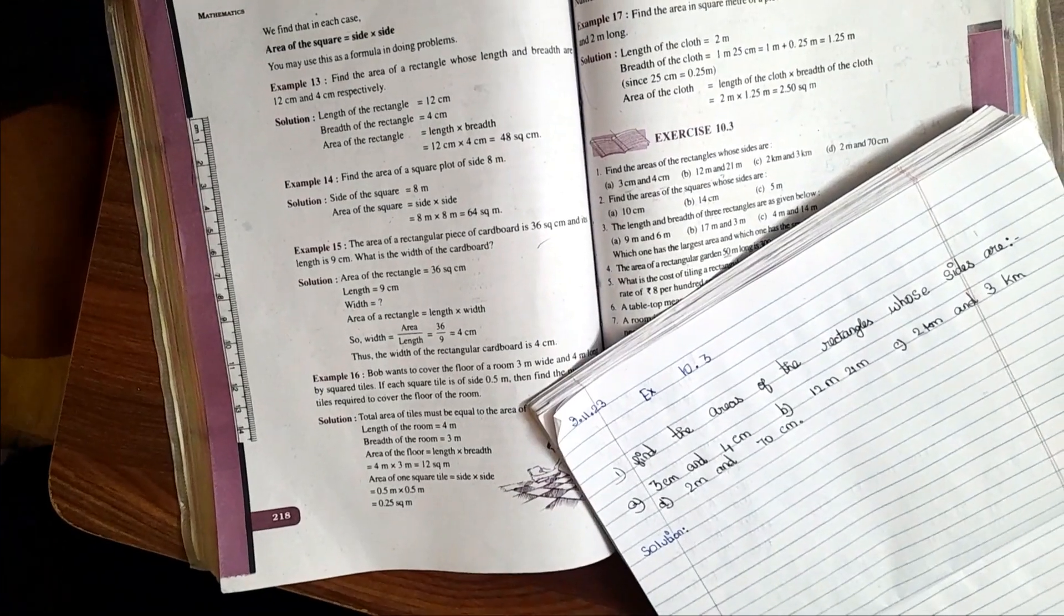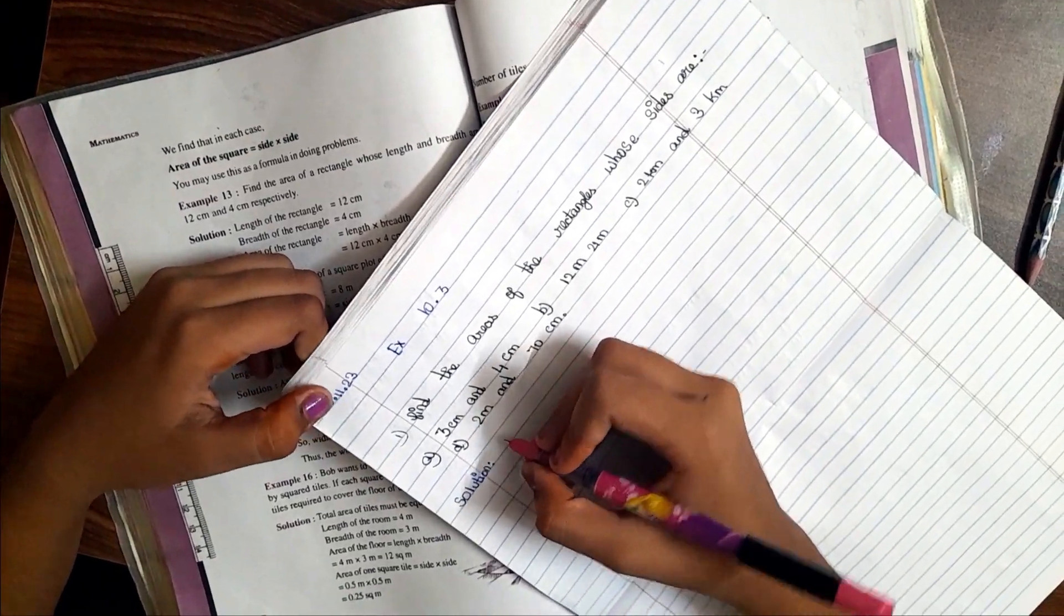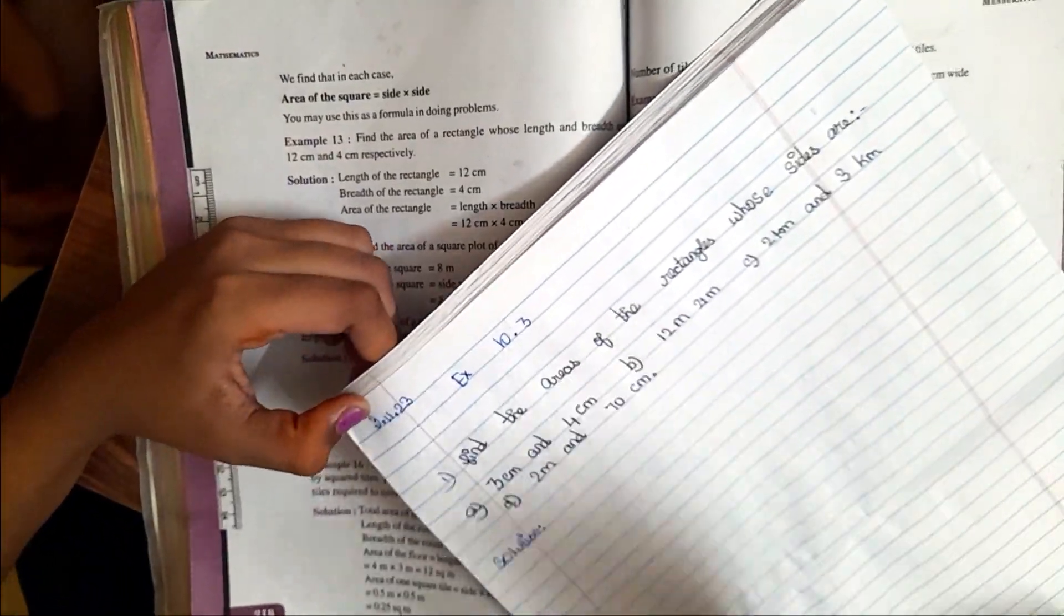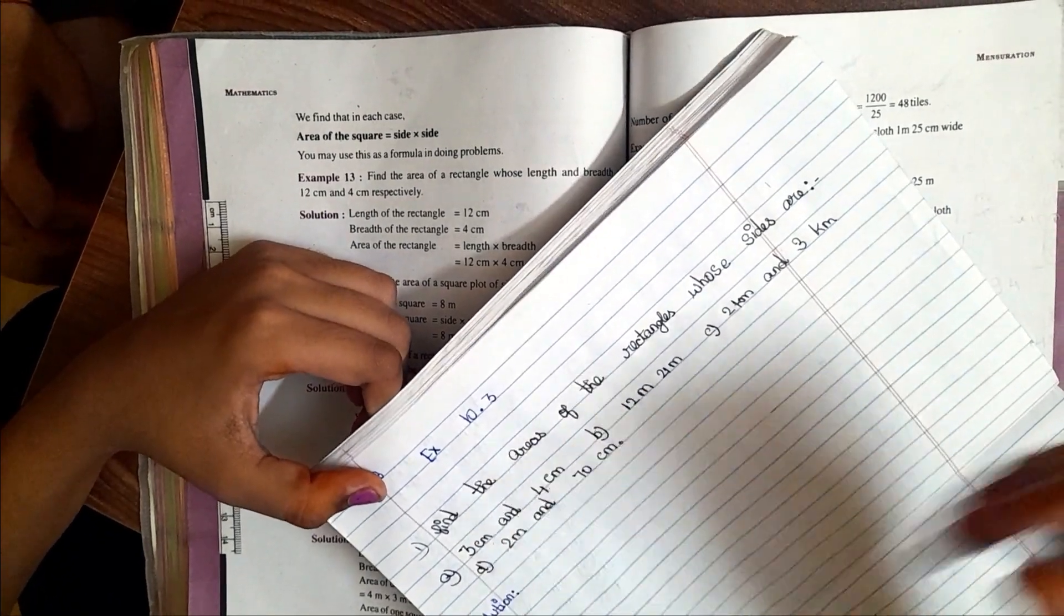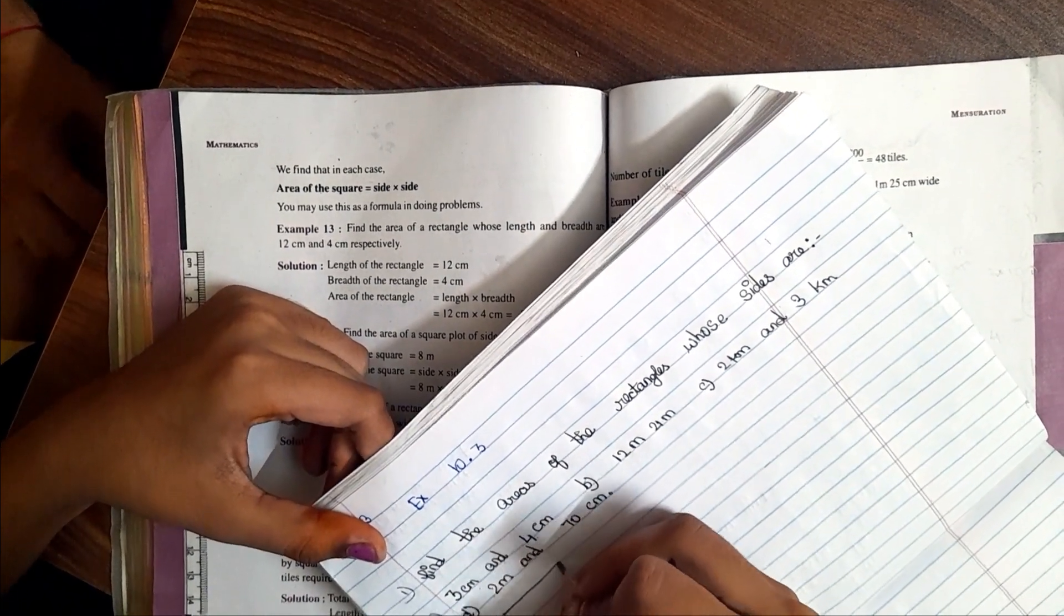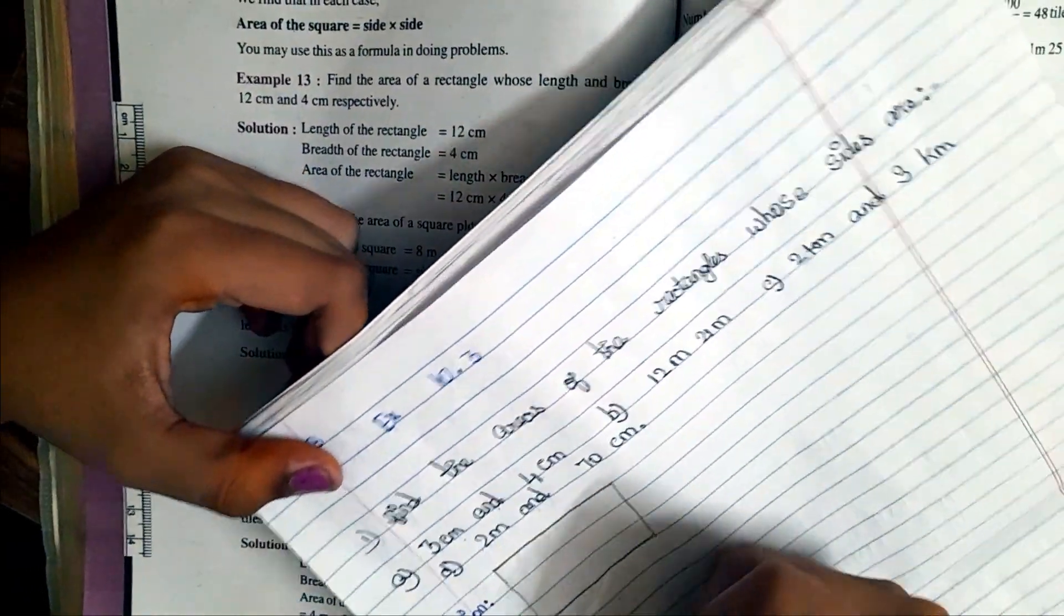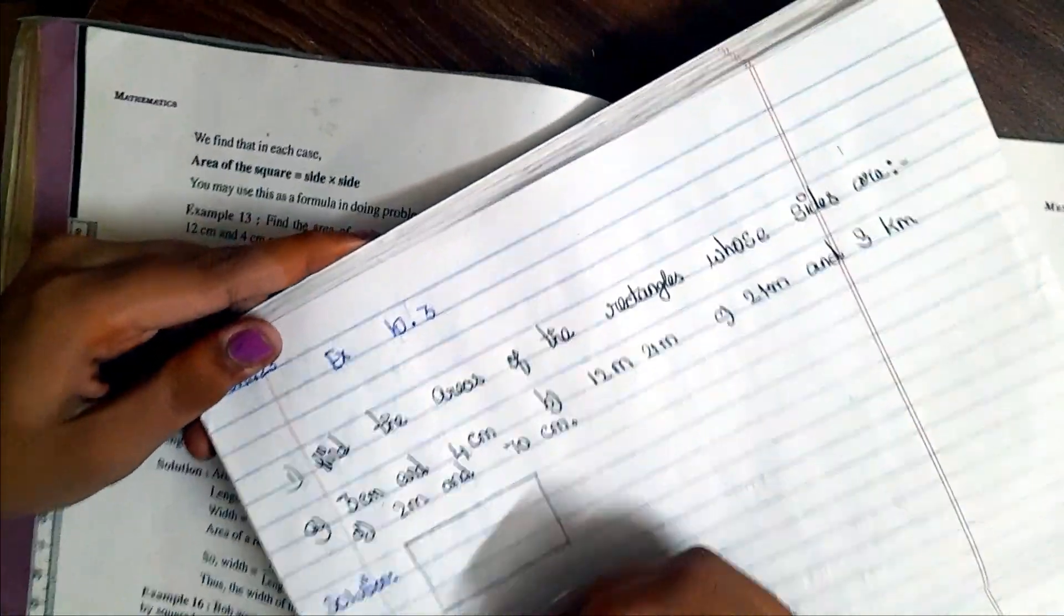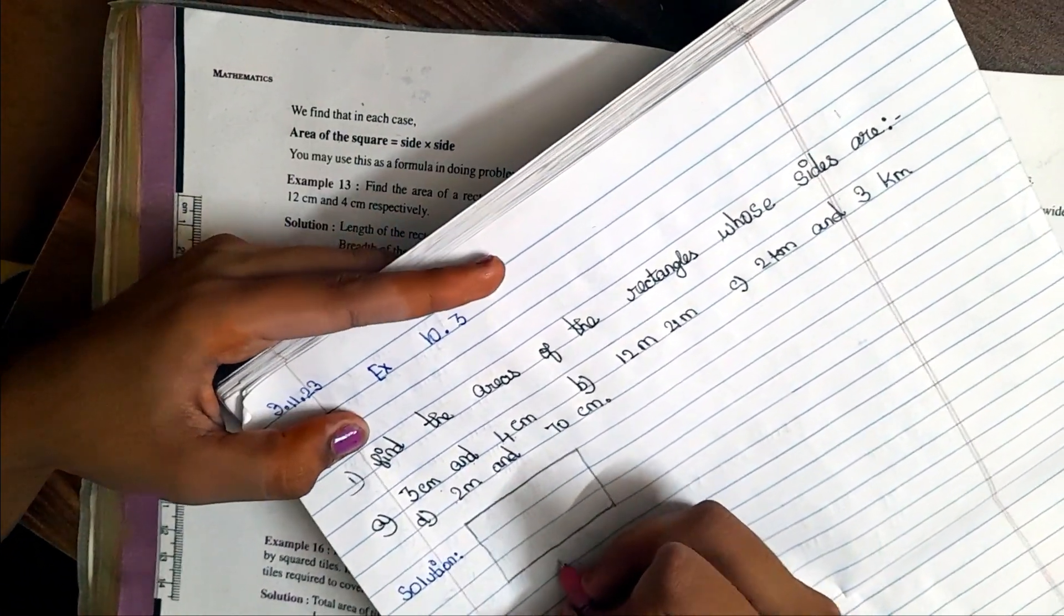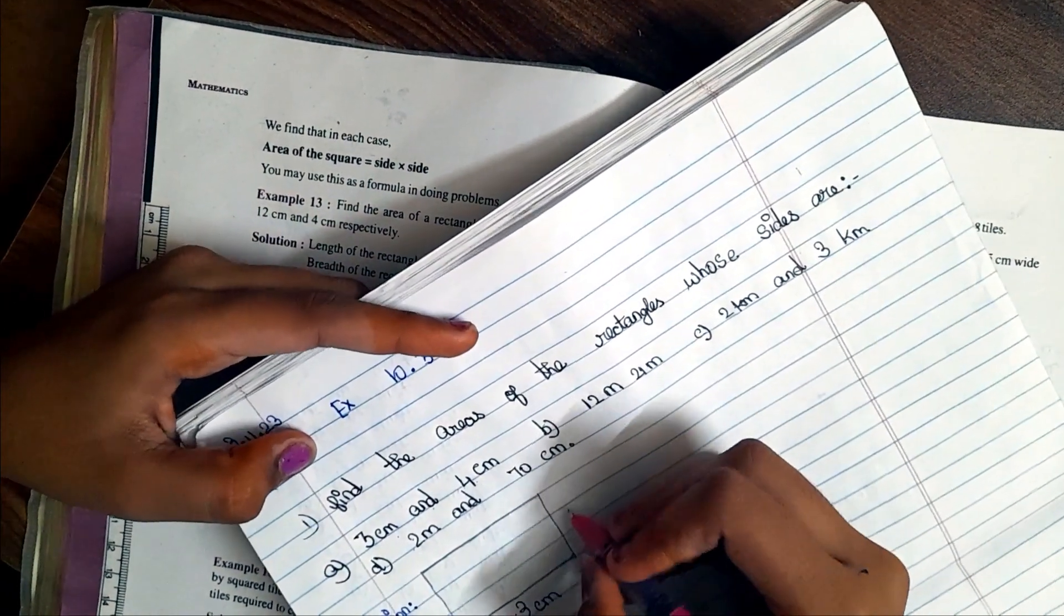Now we are going to solve this problem. The first answer that we are going to solve is 3 cm and 4 cm are given. First draw the rectangle. Now we want to write length and breadth. Here the length is 3 cm. The breadth is 4 cm.